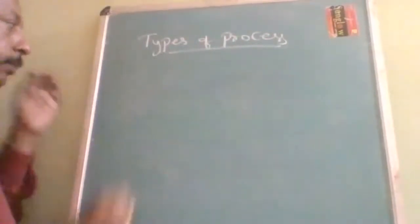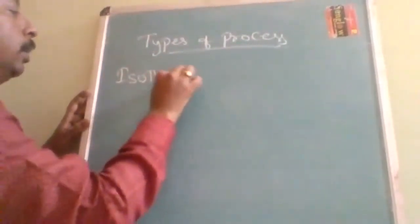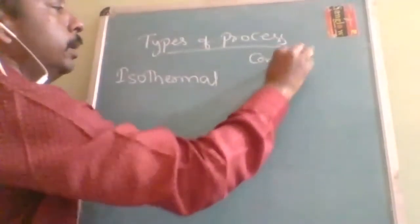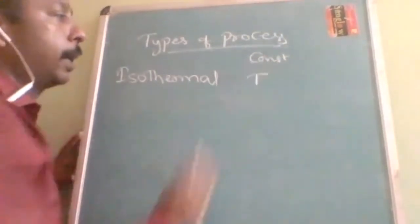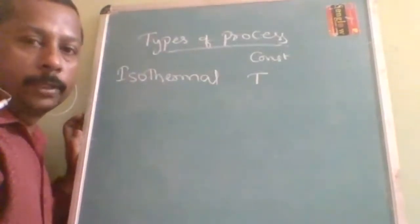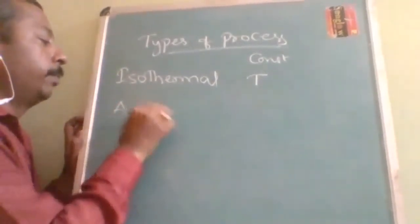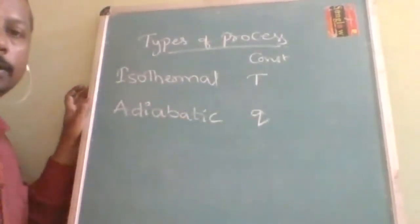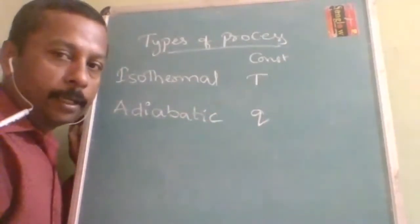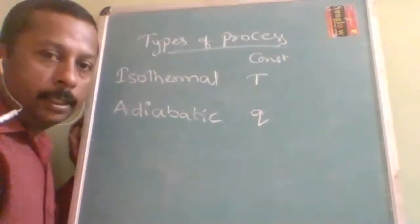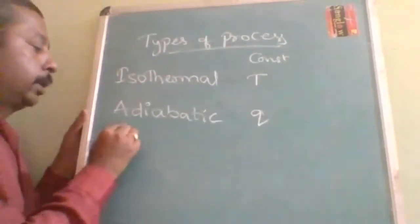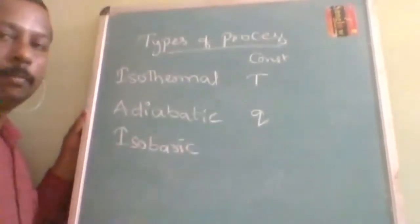Now we are going to discuss types of processes. The first is isothermal — a process carried out at constant temperature. If some process is carried out at constant temperature, it is called isothermal. Similarly, if there is no loss or gain of heat — heat energy is constant — it is called adiabatic. In an adiabatic process, heat energy lost and heat energy gained are both zero.